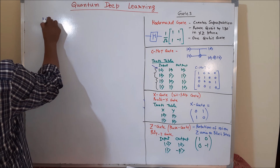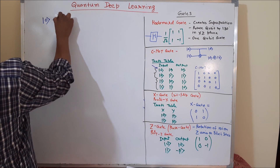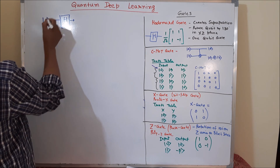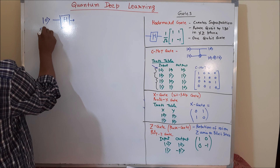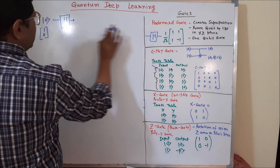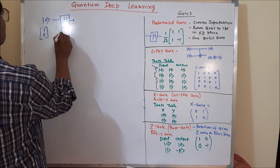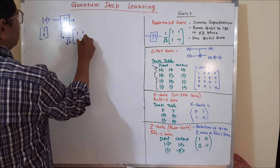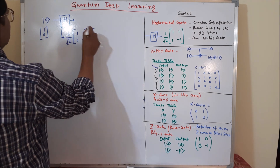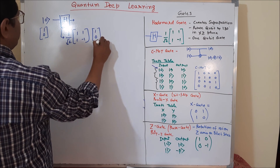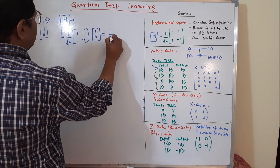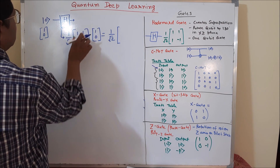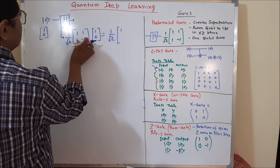How it creates superposition will be clear from a very simple example. Suppose we use one qubit zero and pass it through the Hadamard gate. In the previous discussion regarding the bit and qubit tutorial, I explained that we represent zero as a vector [1, 0]. We know this is the Hadamard matrix. To find the output, we take the Hadamard matrix [1, 1; 1, -1] and multiply it with the state vector [1, 0]. When we multiply, we get the output: multiplying each row gives output 1 and output 1.